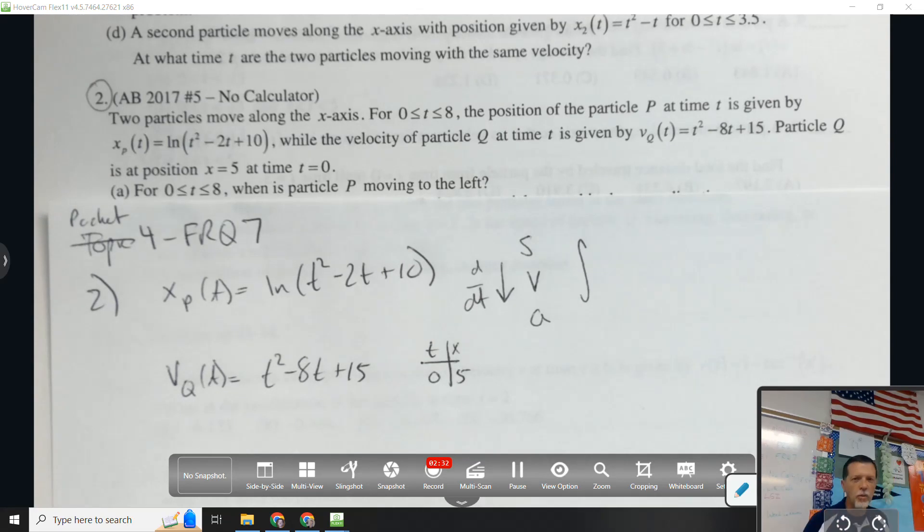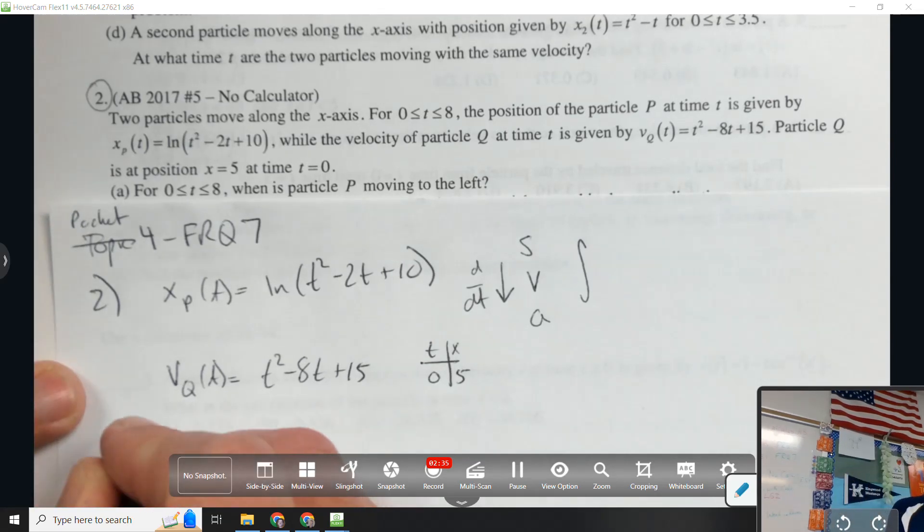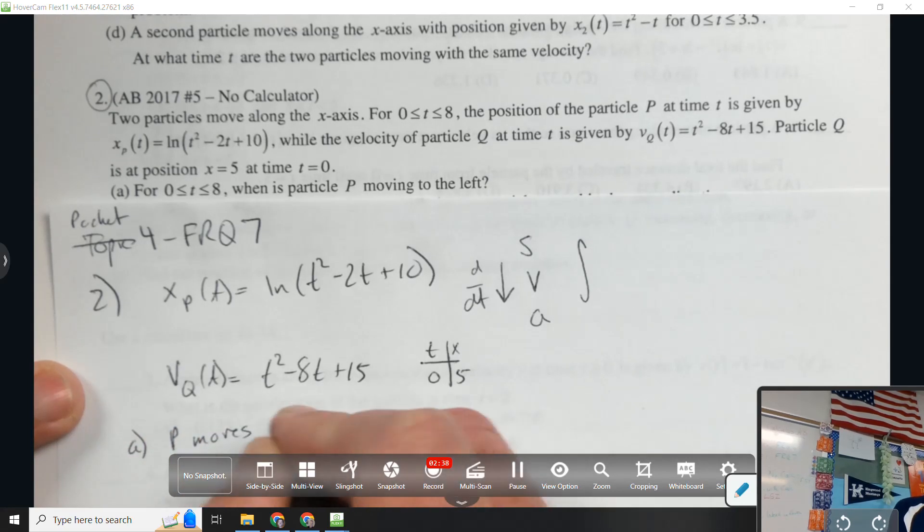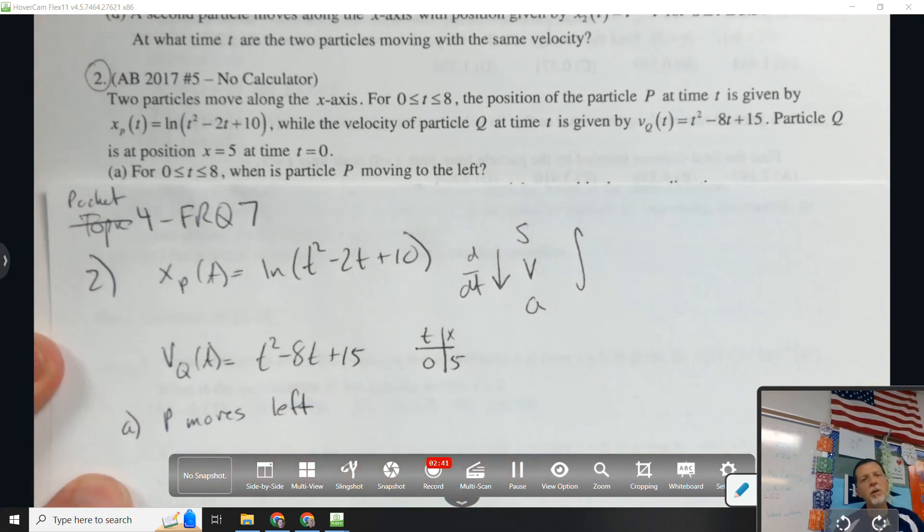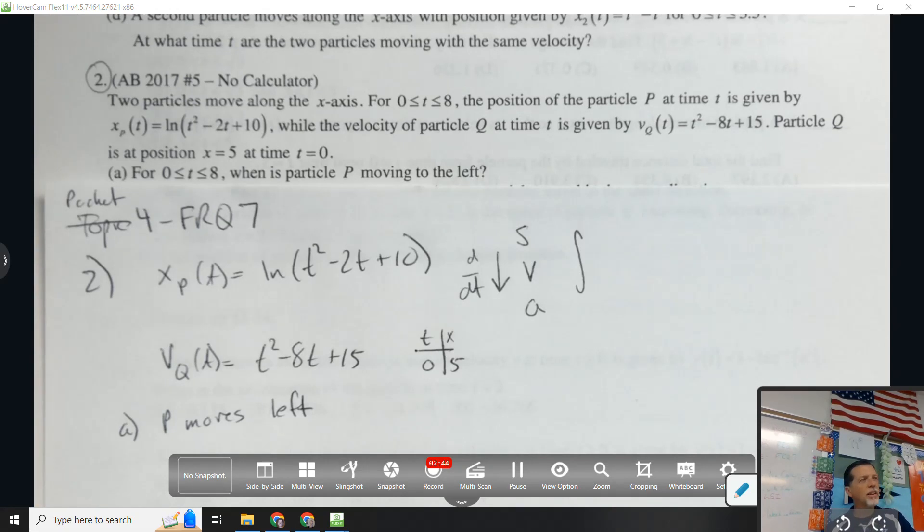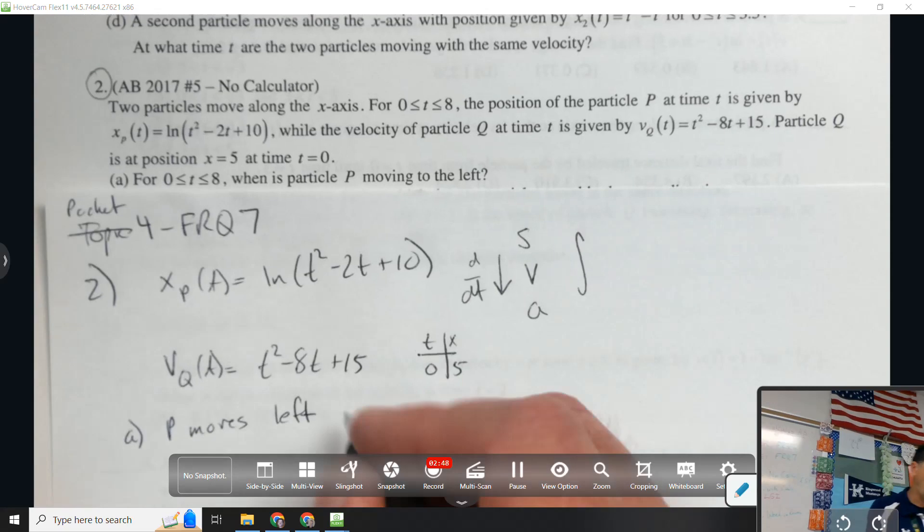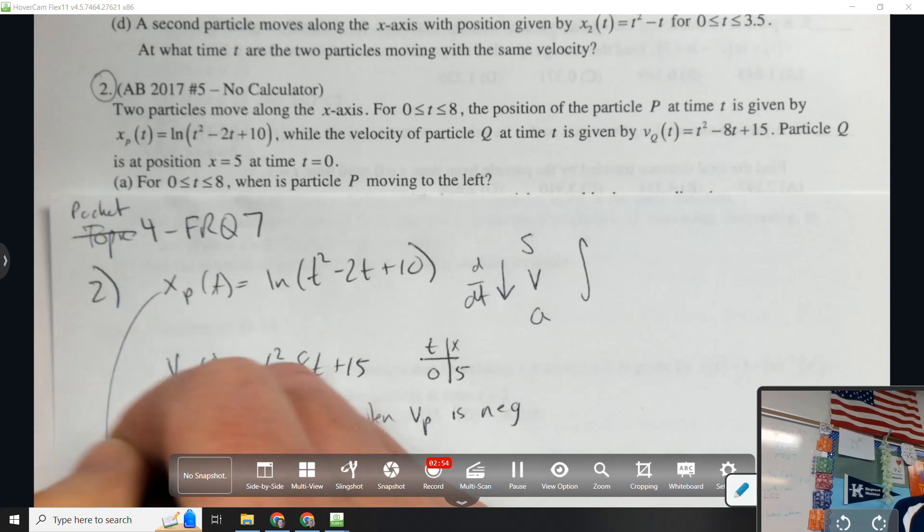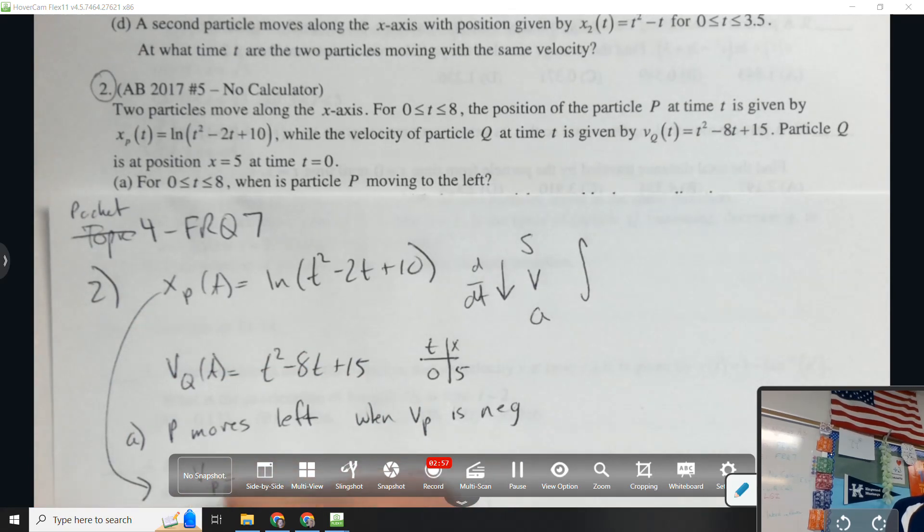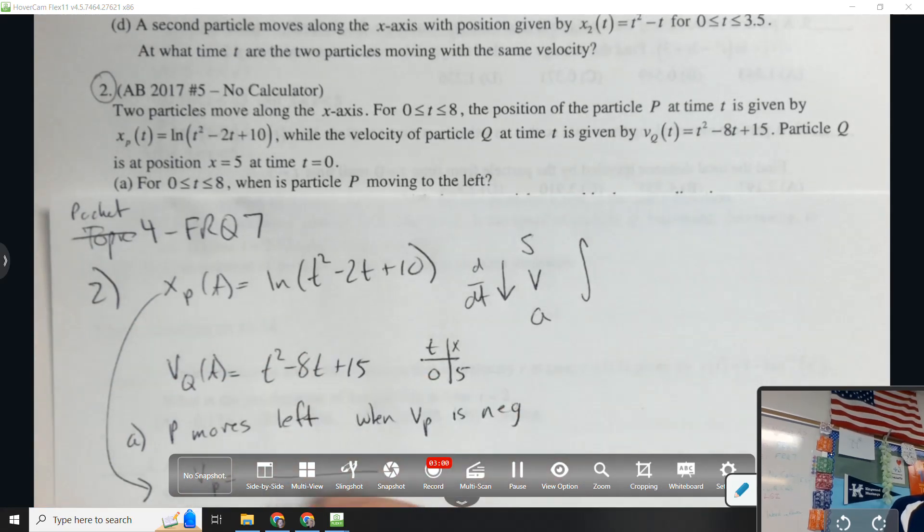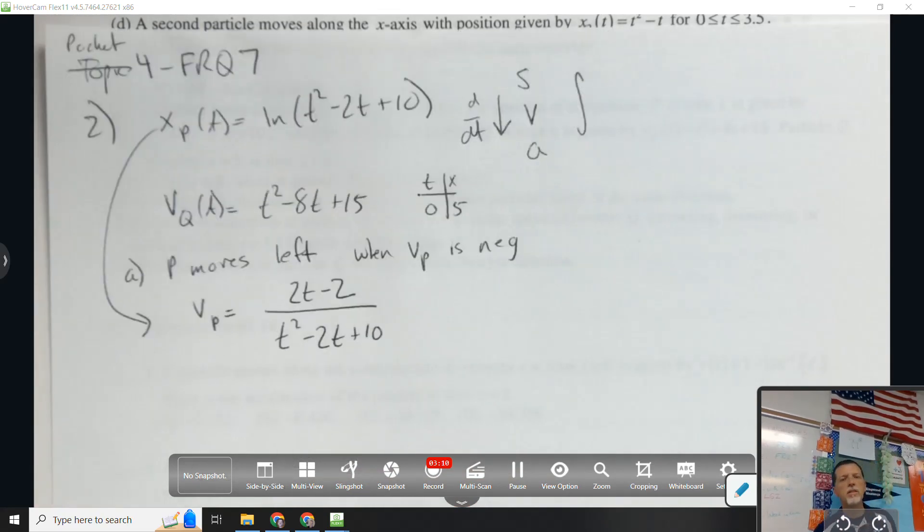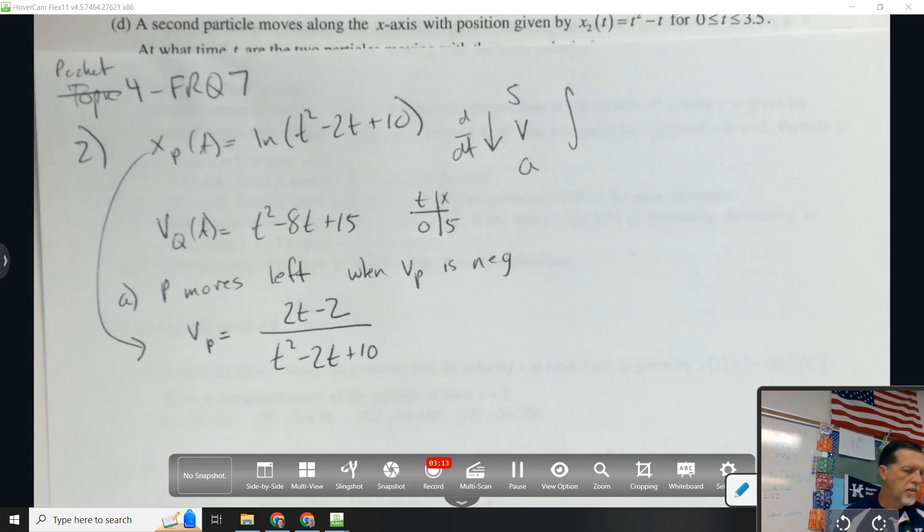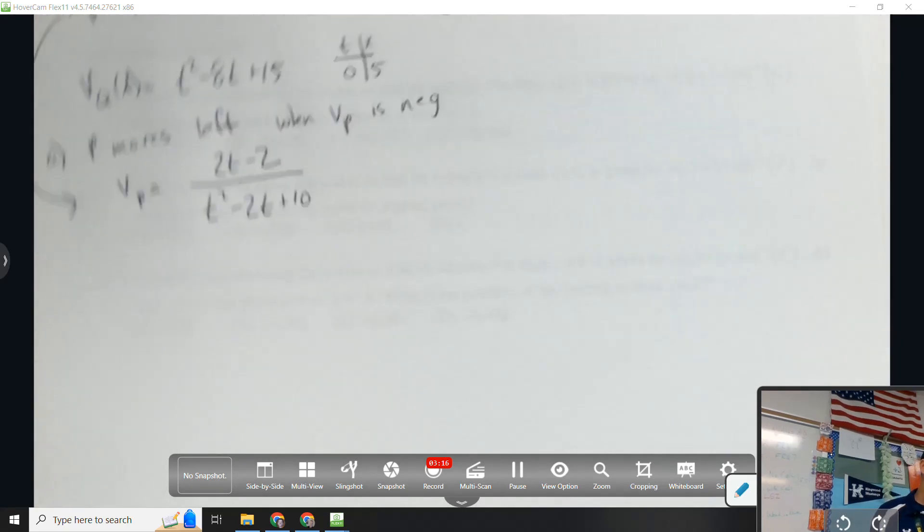Part A: for 0 to 8, when is particle P moving to the left? It doesn't ask us to justify, but let's justify first so we know what we're looking for. How do I know when P moves left? When velocity is negative. So, when velocity of P is negative.